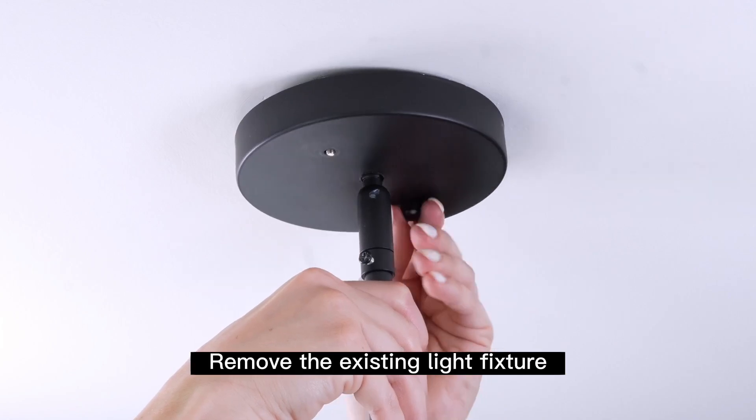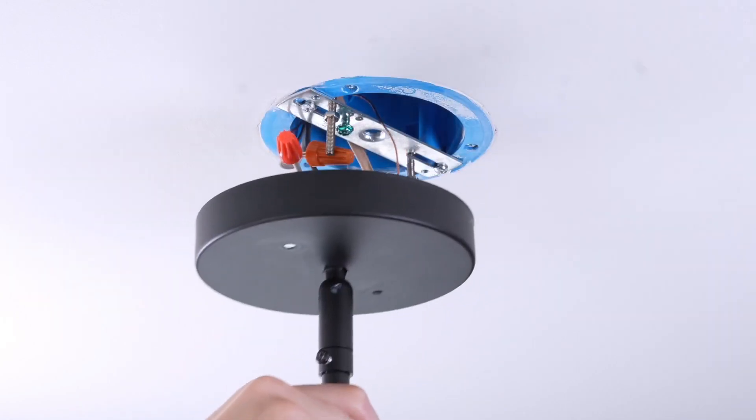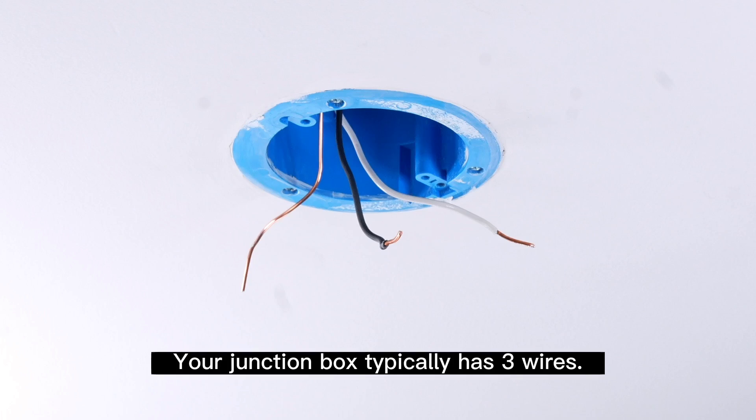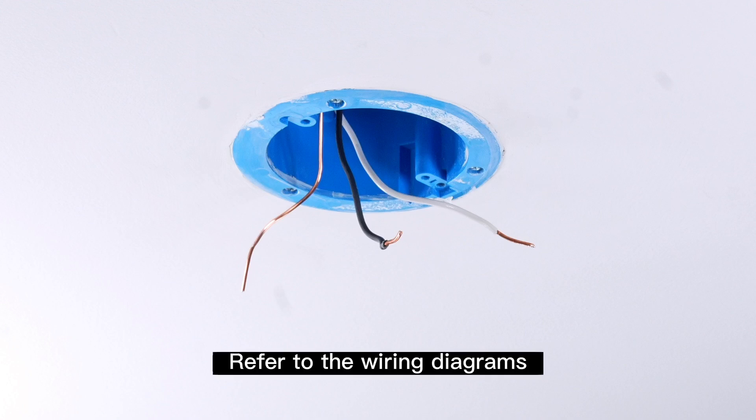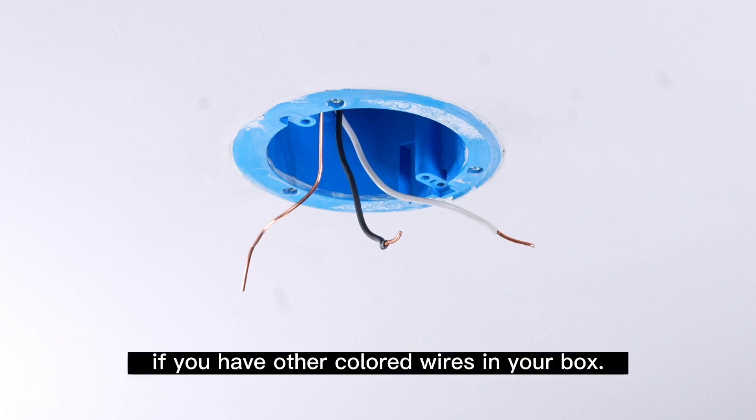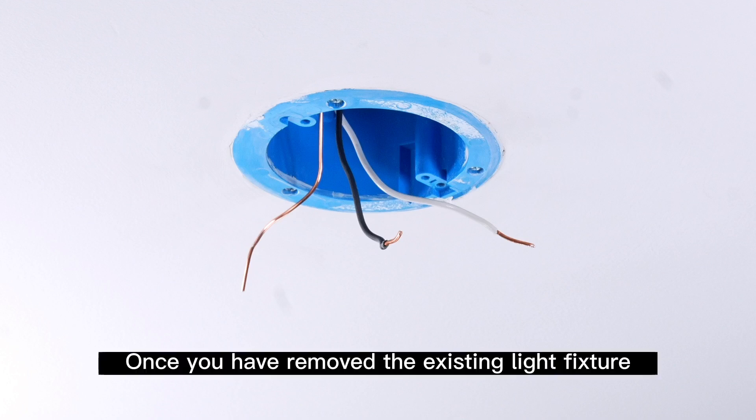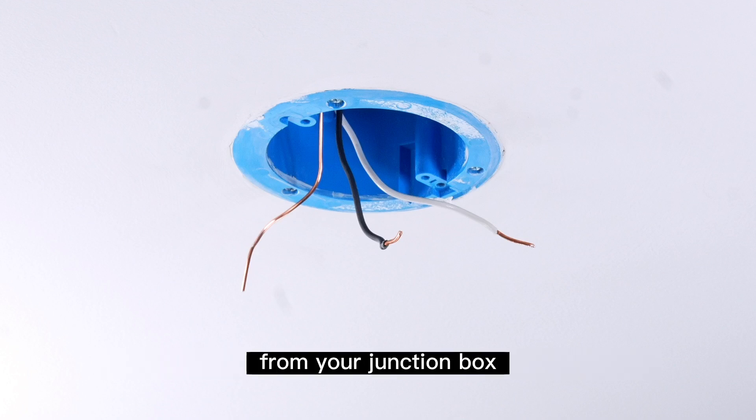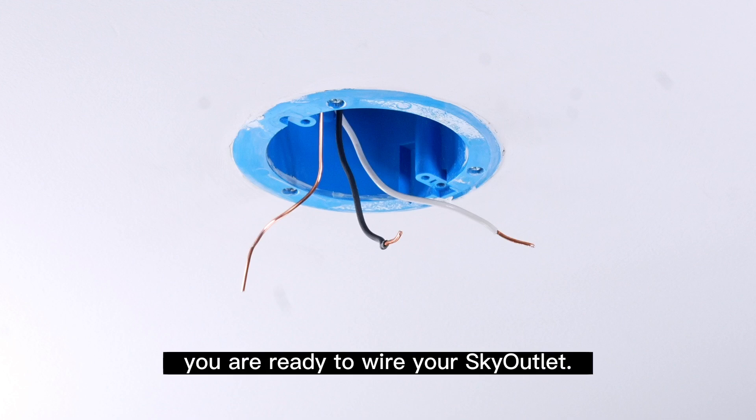Remove the existing light fixture from the ceiling if needed. Your junction box typically has three wires: live, neutral, and ground. Refer to the wiring diagrams provided in the instruction manual if you have other colored wires in your box. Once you have removed the existing light fixture from your junction box, you are ready to wire your sky outlet.